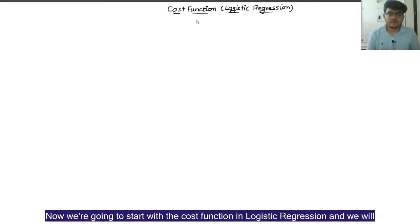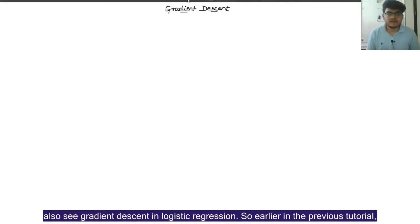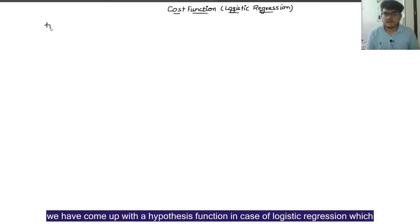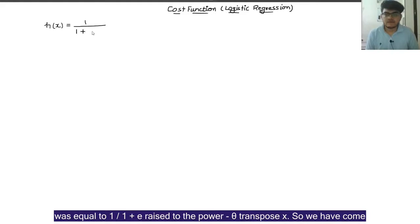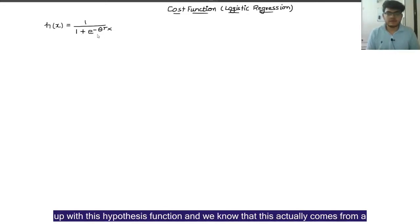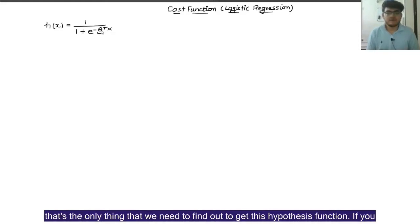We are going to start with the cost function in logistic regression and we will also see gradient descent in logistic regression. In the previous tutorial we came up with a hypothesis function — 1 upon 1 plus e raised to the power minus theta transpose x. Now we are going to find out the theta parameters, because that's the only thing we need to find to get this hypothesis function.